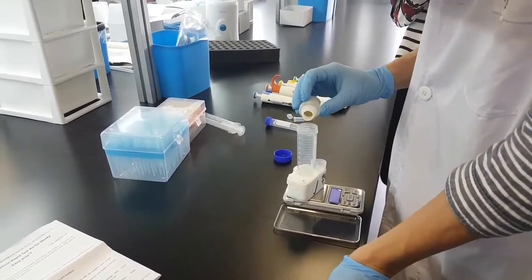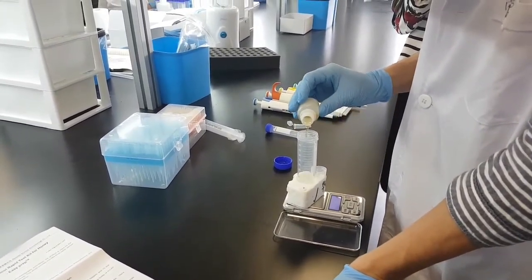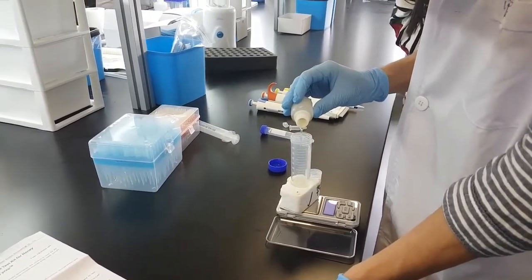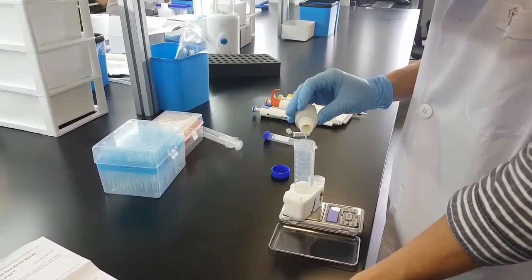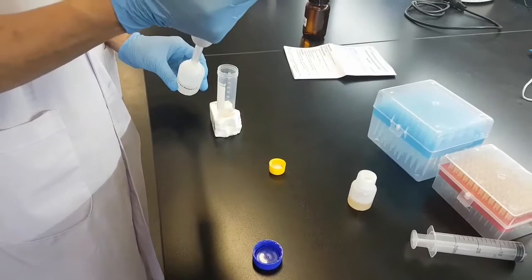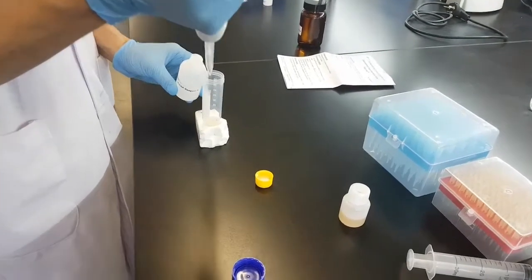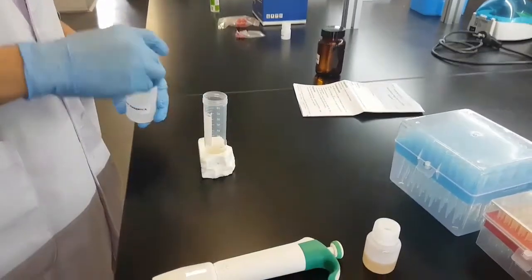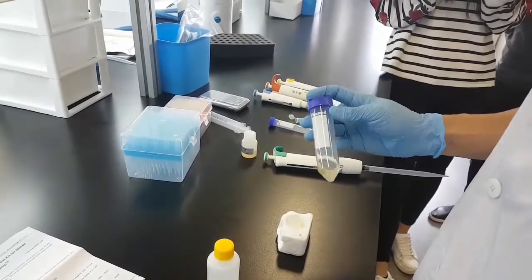Now we are going to weigh four grams of homogeneous honey sample. We are now putting it into the 50 milliliter centrifuge tube. Now we will put four milliliters of reagent A. Now we will mix the sample.